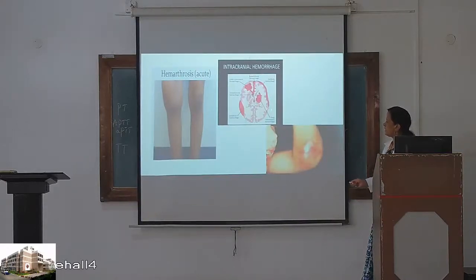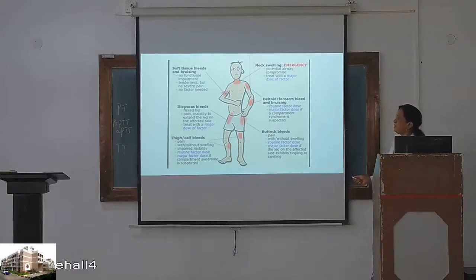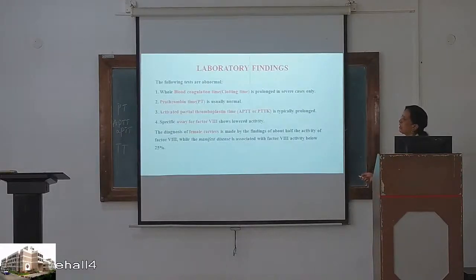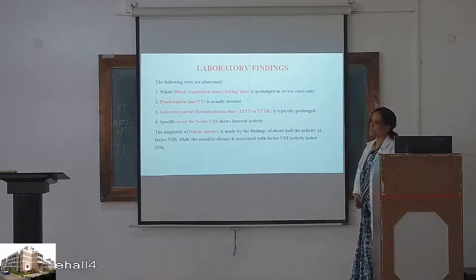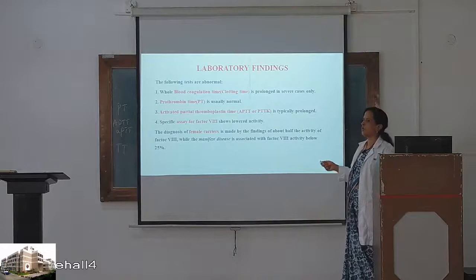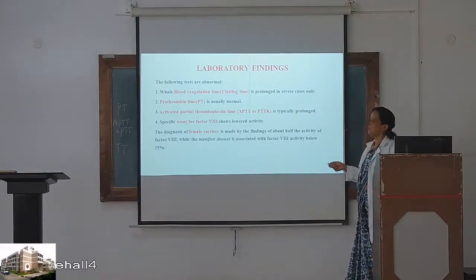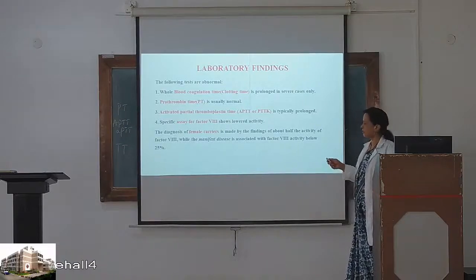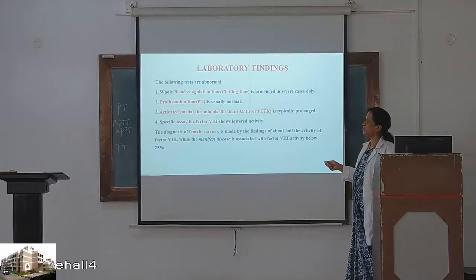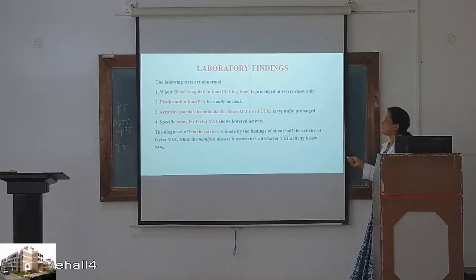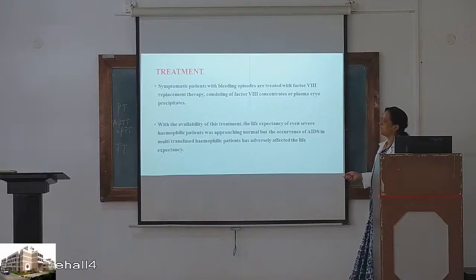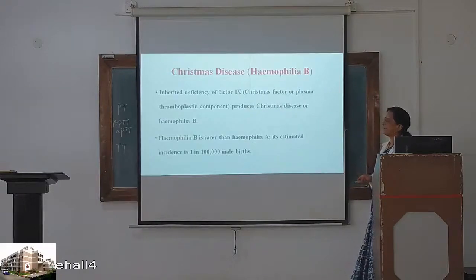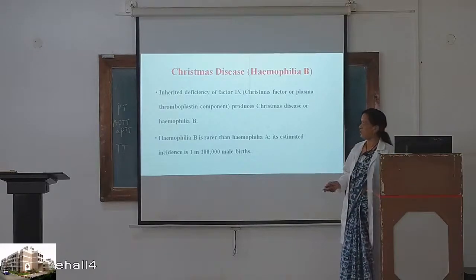Diagnosis of female carriers is made by measuring the activity of factor VIII. Treatment is giving factor VIII. That is hemophilia A — classic hemophilia with factor VIII deficiency. Christmas disease is hemophilia B — factor IX deficiency. Its estimated incidence is 1 in 100,000 male births. Many times we will not know which type it is — it is only after estimating the factor in the laboratory that we know it belongs to hemophilia B. Then factor IX must be given. The usual screening tests are similar to classic hemophilia, but here we do a factor IX assay.